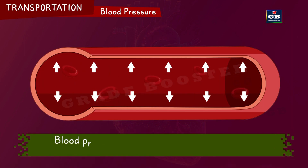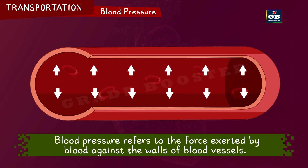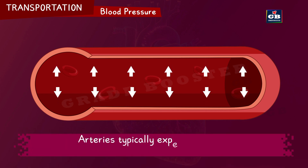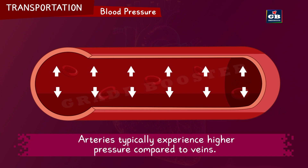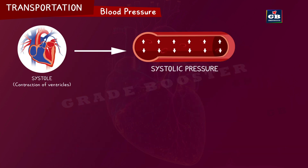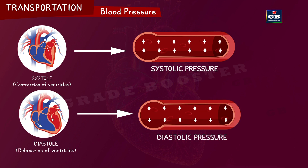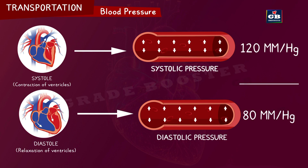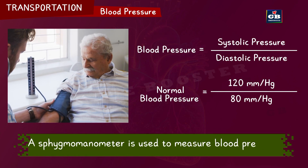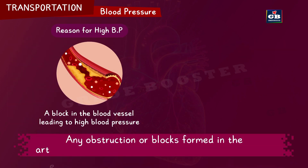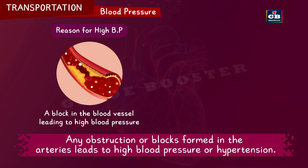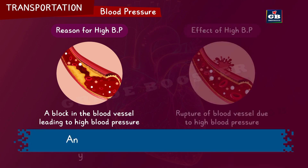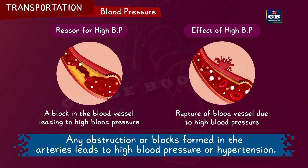Blood pressure refers to the force exerted by blood against the walls of blood vessels. Arteries typically experience high blood pressure compared to veins. Systolic pressure denotes the pressure in arteries during ventricular contraction, while diastolic pressure indicates the pressure during ventricular relaxation. Normal blood pressure is around 120 mmHg systolic and 80 mmHg diastolic. A sphygmomanometer is used to measure blood pressure. Any obstruction or blocks formed in the arteries leads to high blood pressure or hypertension, which if untreated may lead to rupture of blood vessels and serious problems.